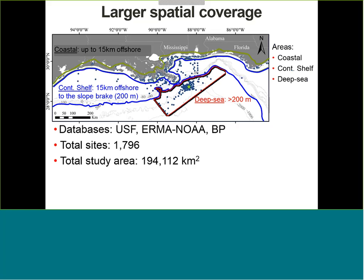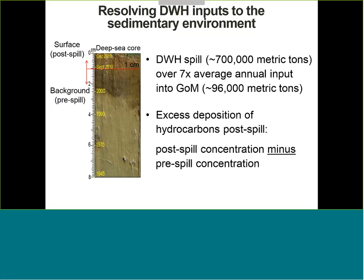We looked at hydrocarbon composition in surface sediments and wanted to resolve how much actually reached the bottom relative to background. Using our initial studies showing a one-centimeter surface layer with composition similar to Deepwater Horizon oil, we compared surface concentrations to background levels to calculate an excess deposition of hydrocarbons post-spill. This approach made sense because the Deepwater Horizon spill introduced hydrocarbons over seven times the average annual input to the Gulf of Mexico, so that excess should be detectable in surface sediments.